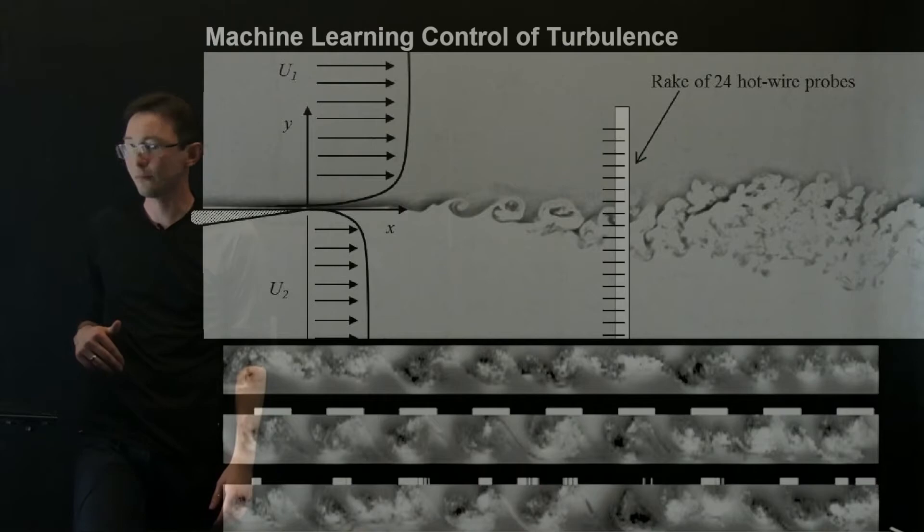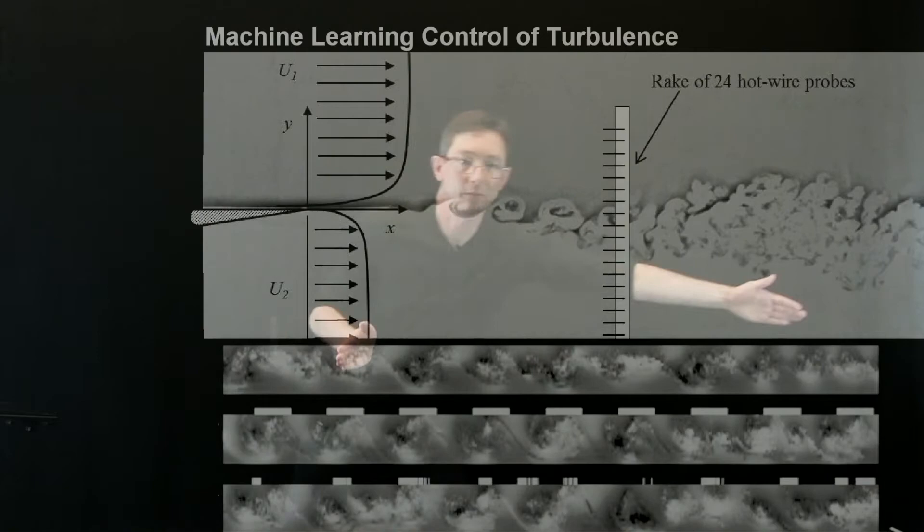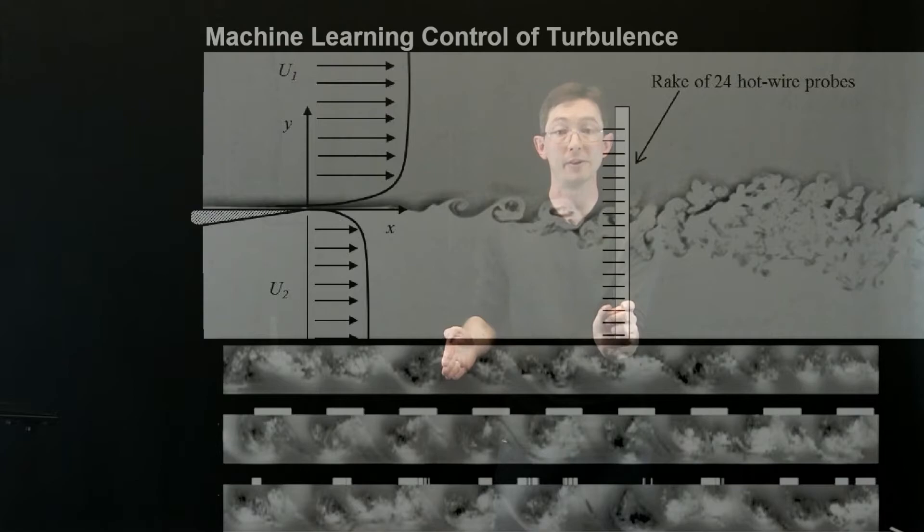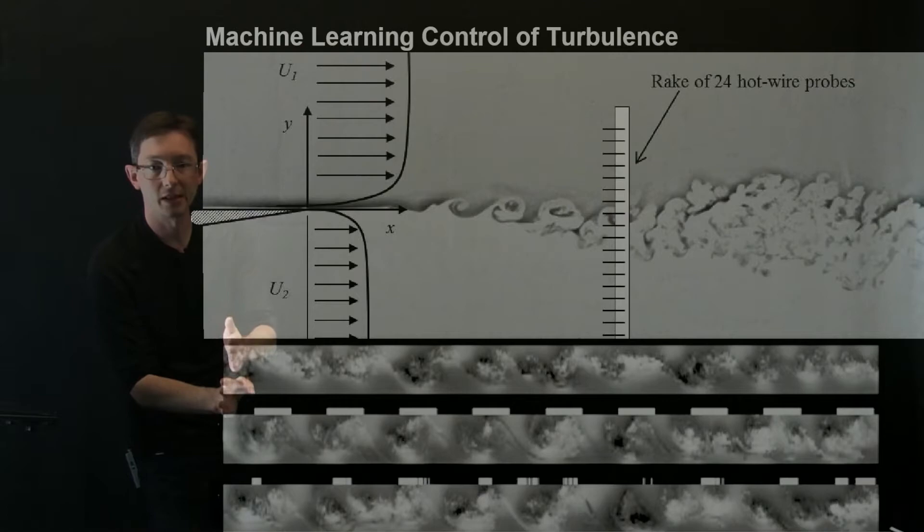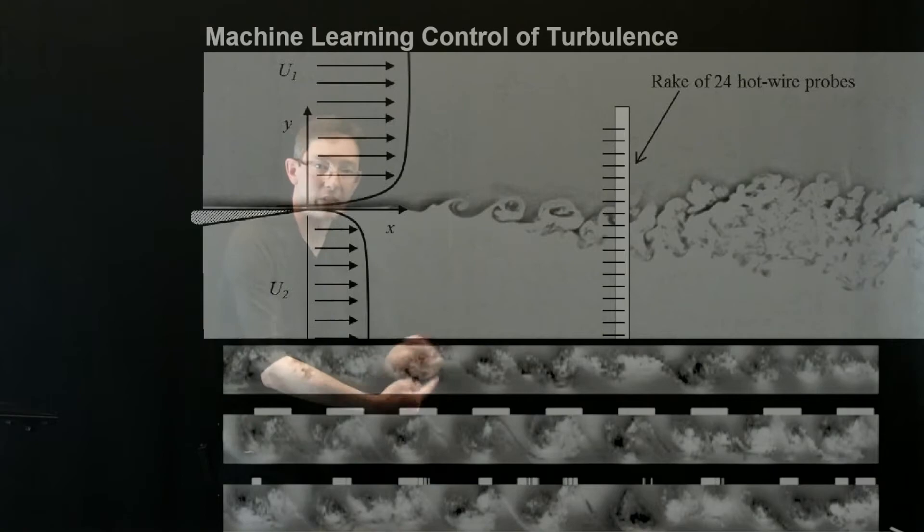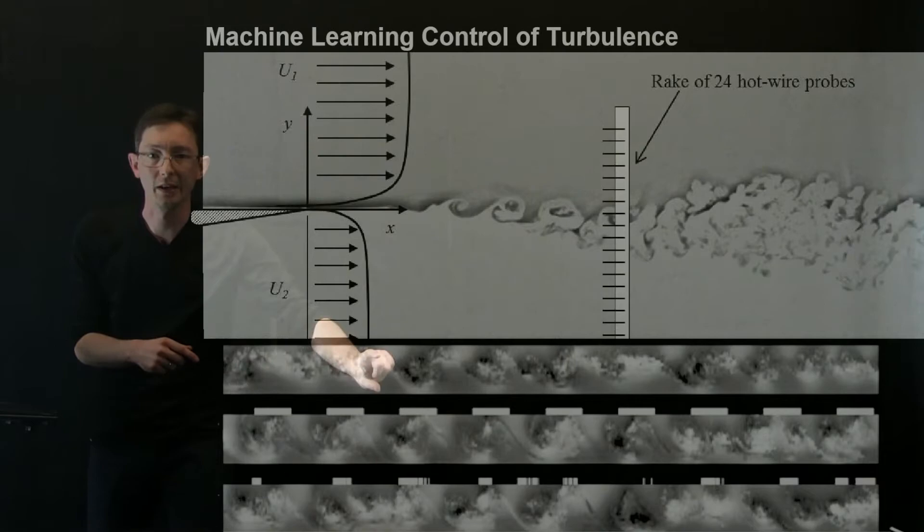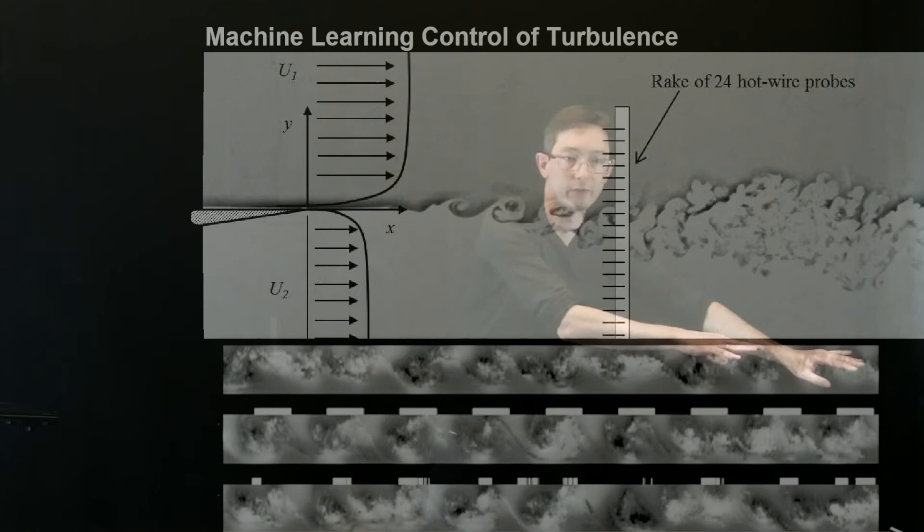So here, what we have is called a pseudo visualization. So time goes from left to right. And what each vertical strip is showing are these 24 hotwire measurements. So dark or light would be big positive or big negative flow velocities. And so you can kind of see the pseudo visualization of those 24 hotwire measurements in time evolving. So you can see these kind of big vortex rollup events happening. It looks really cool. The top plot here is the natural flow unforced. So this is a flow with no forcing. It's just evolving at this downstream location.